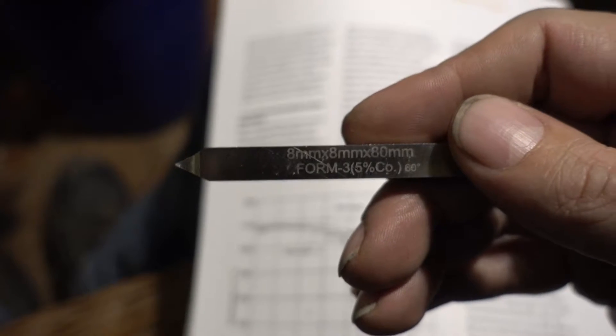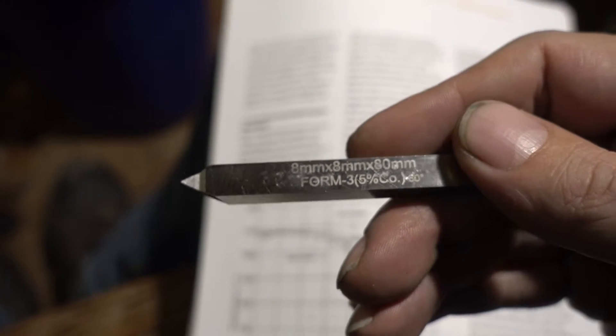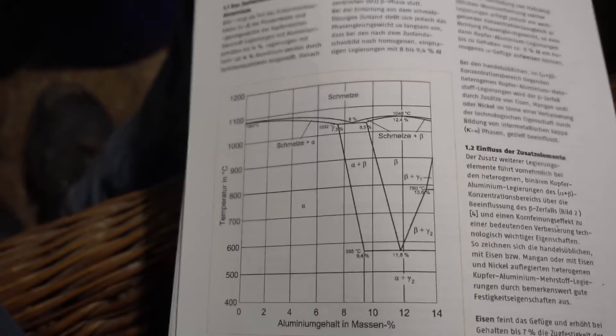So I went for the 5% cobalt stuff. This is the back of a form tool I ground the other way around - 5% cobalt, 60-degree form. I used the back of it and even that got destroyed by the attempt of cutting that material.